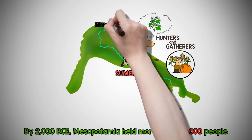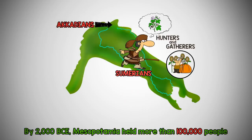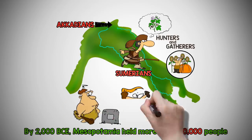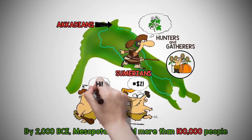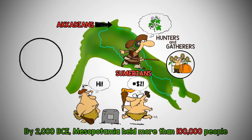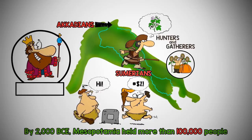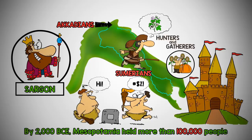Another tribe of people lived north of Mesopotamia: the Akkadians. They spoke a different language than the Sumerians and lived very nomadic lives. A strong Akkadian leader named Sargon united the Akkadians, oversaw the building of a city on the banks of the Euphrates River, and then attacked one city or tribe after another until he conquered all of Mesopotamia. This created the first unified empire, the Akkadian Empire.